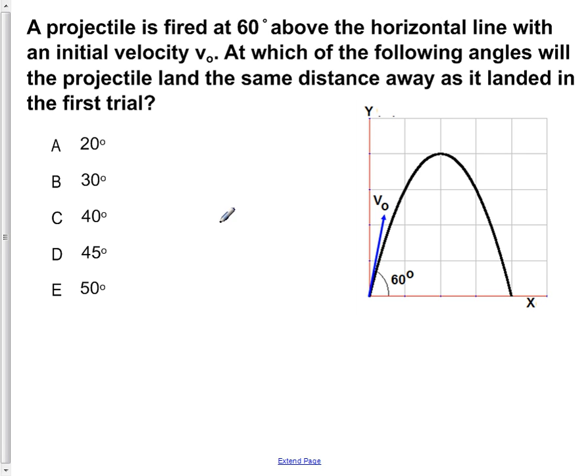A projectile is fired at 60 degrees above the horizontal line with an initial velocity v-naught. At which of the following angles will the projectile land the same distance away as it landed in the first trial?